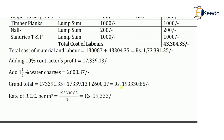Since all materials and labor were calculated for 10 meter cube, to find the rate per meter cube we divide the grand total by 10. So ₹1,93,330.85 ÷ 10 = ₹19,333 per meter cube. This is the rate of RCC per meter cube.